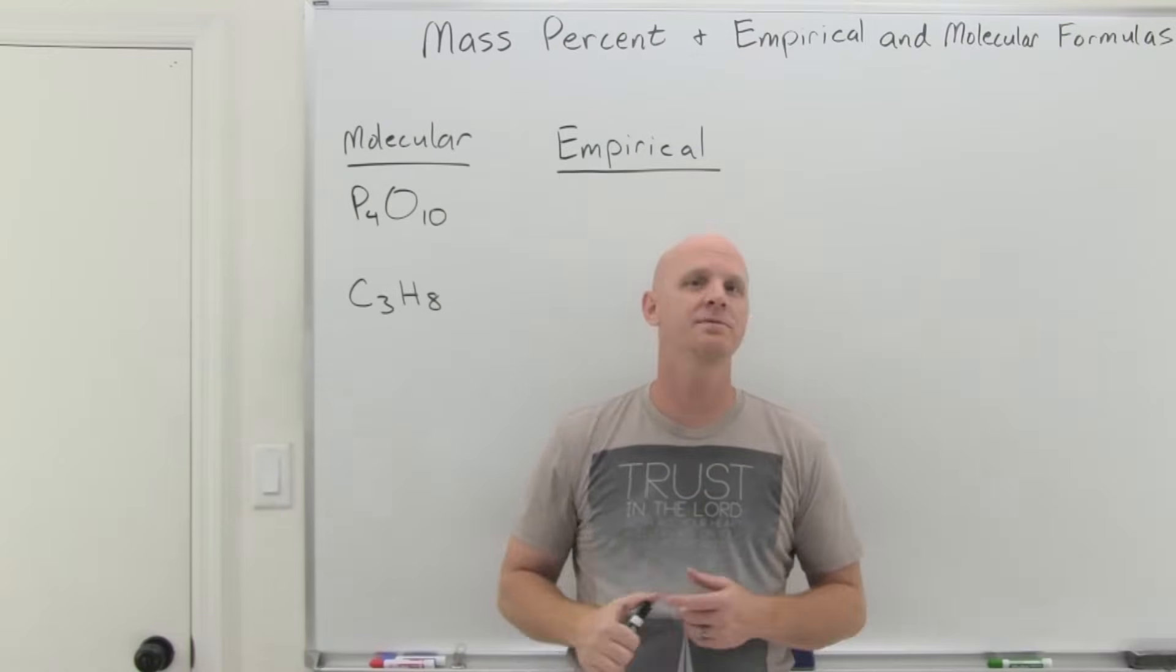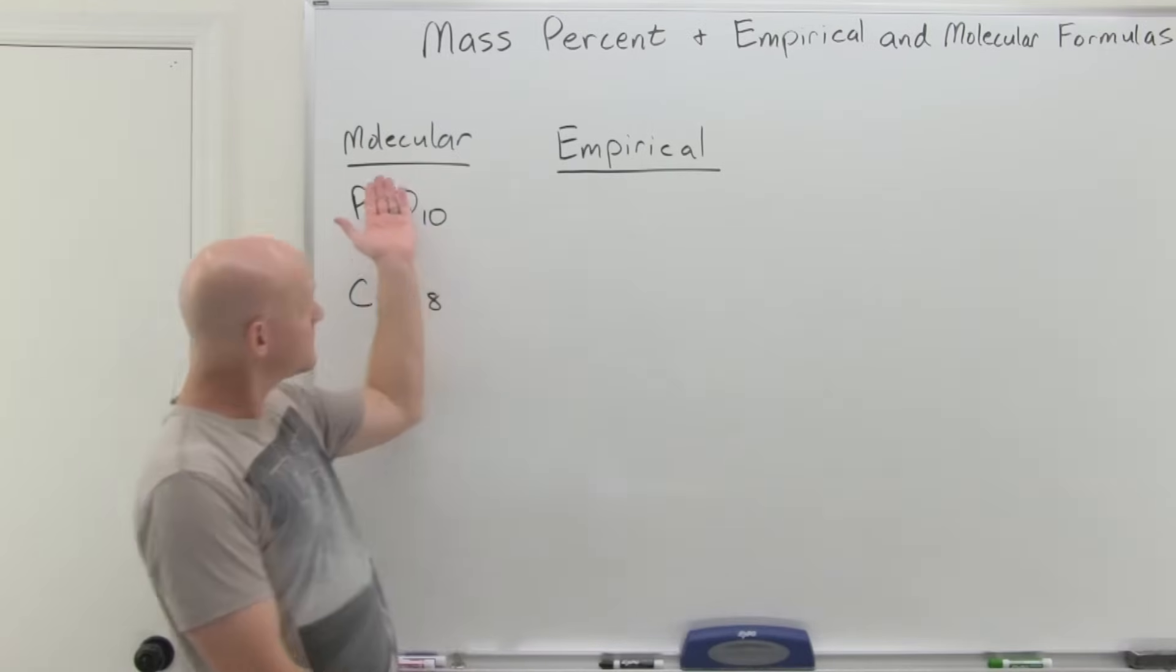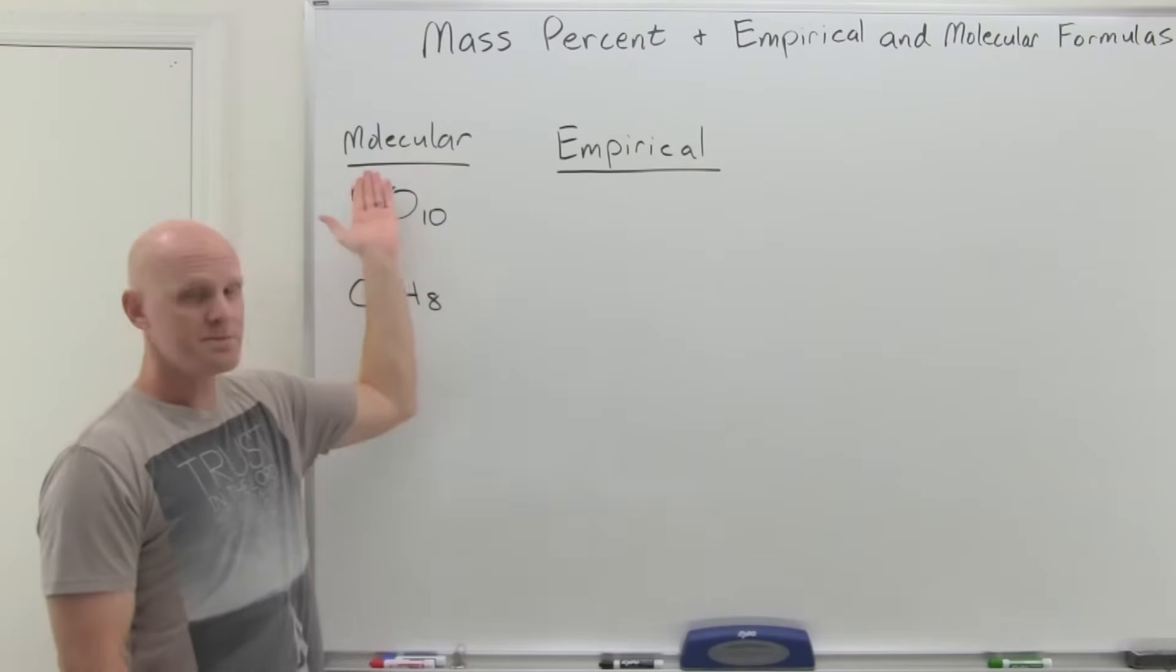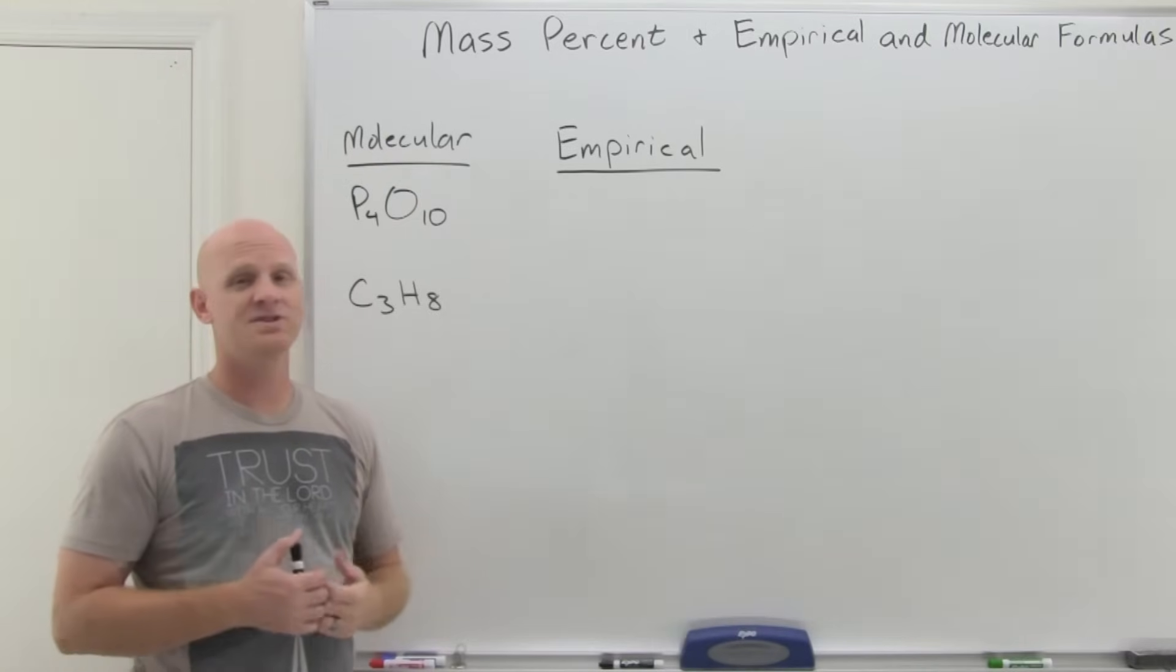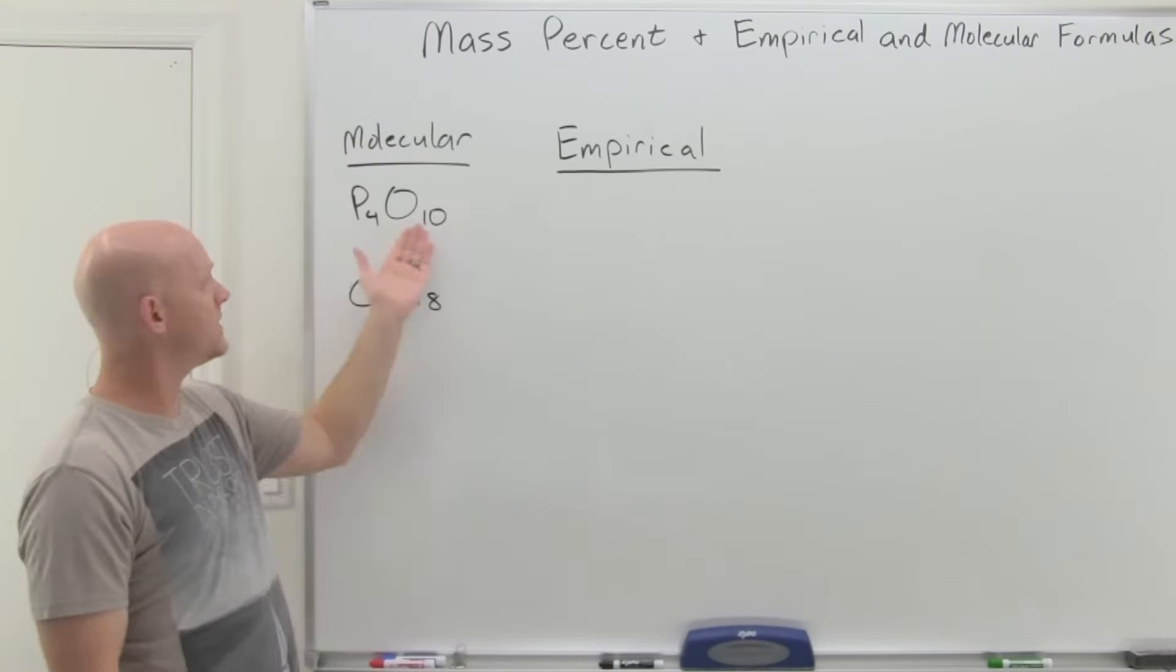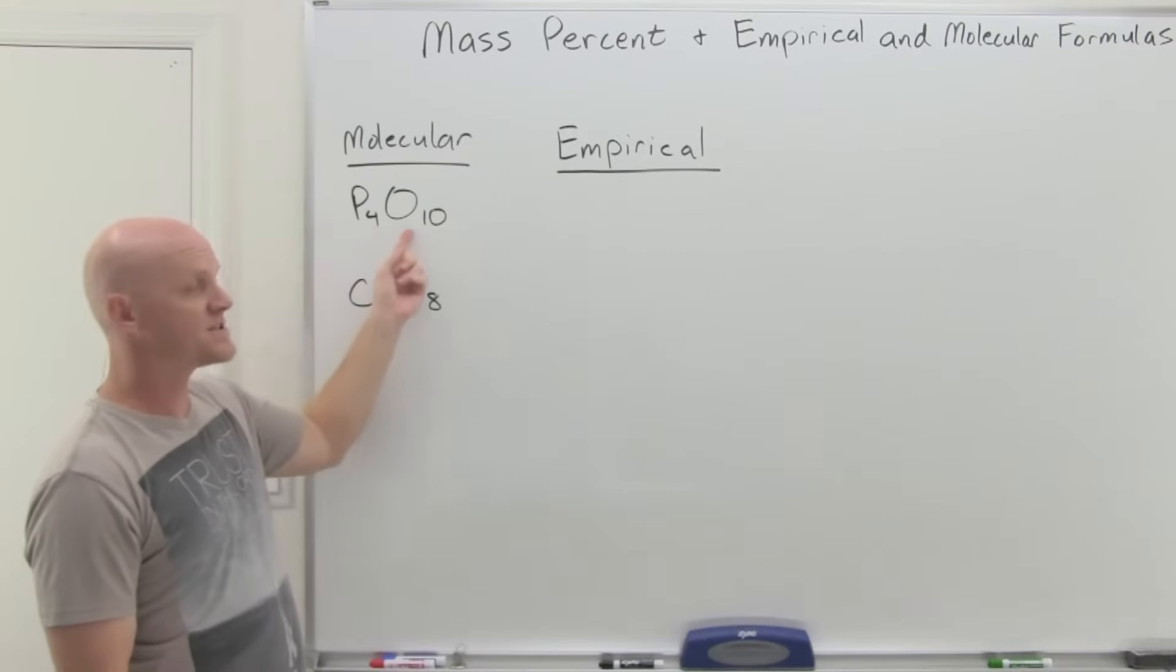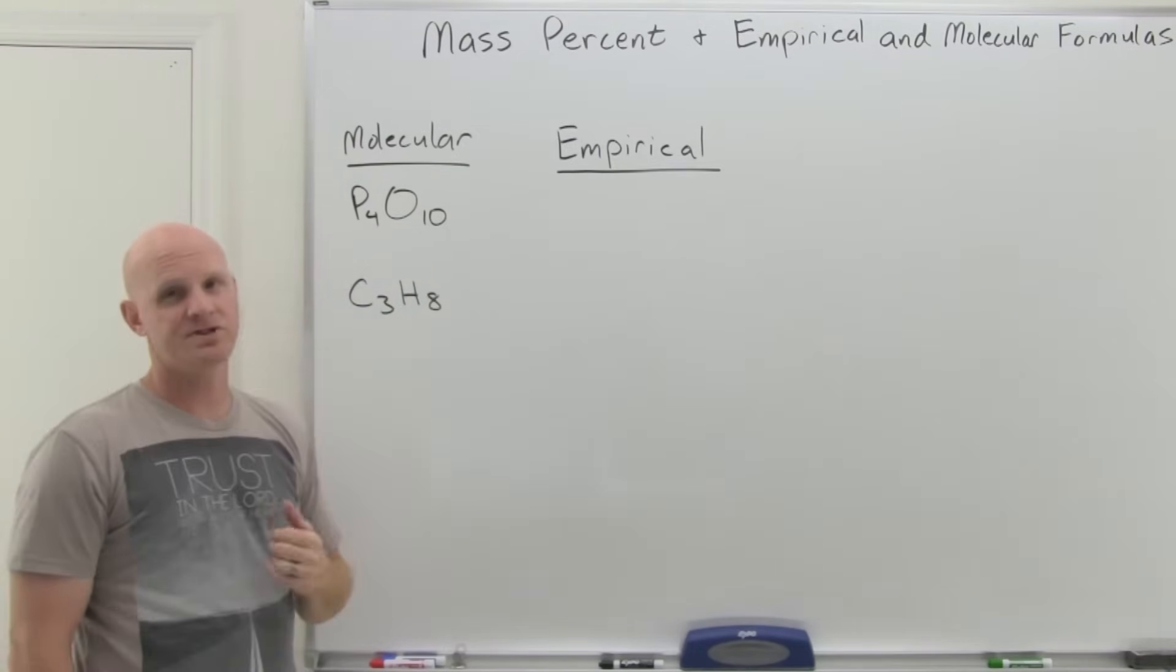We're going to start by comparing and contrasting the molecular formula and empirical formula of a compound. The molecular basically tells you exactly how many of each type of element there are, how many atoms in a single molecule. So for P4O10, we can see that in a single molecule of tetraphosphorus decoxide, there are four phosphorus atoms and ten oxygen atoms.